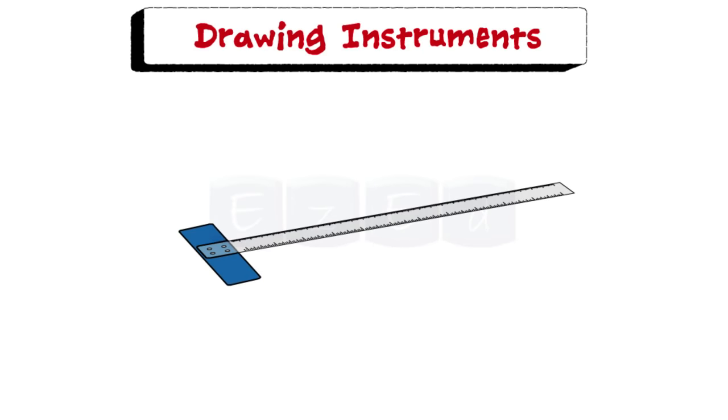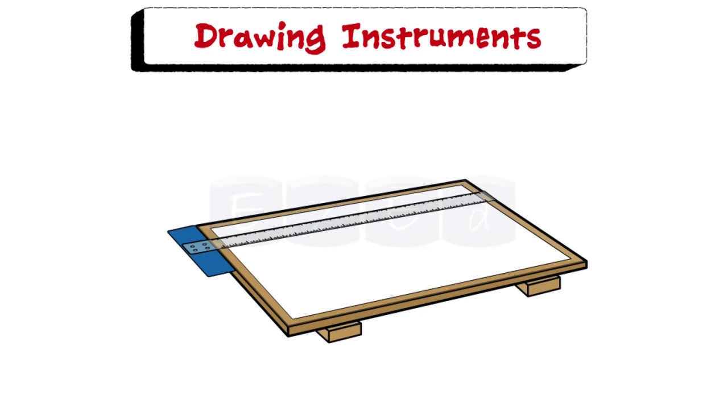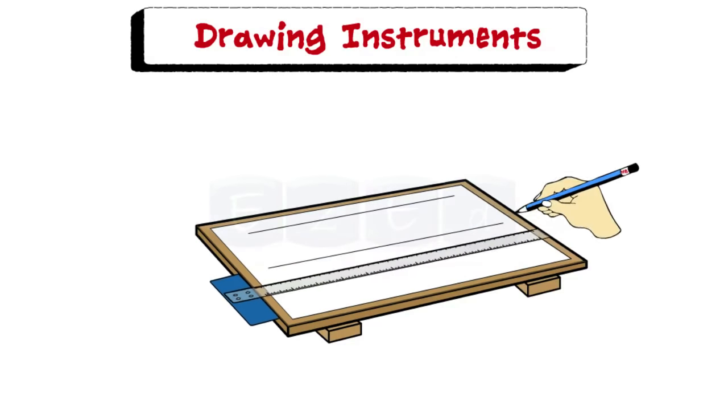Next is the t-square. It is made of two parts, the stock and the blade, which are joined together at right angles by means of screws and pins. T-square is fitted at the side of the drawing board and it slides along the edge of the board and is used to draw horizontal straight lines.